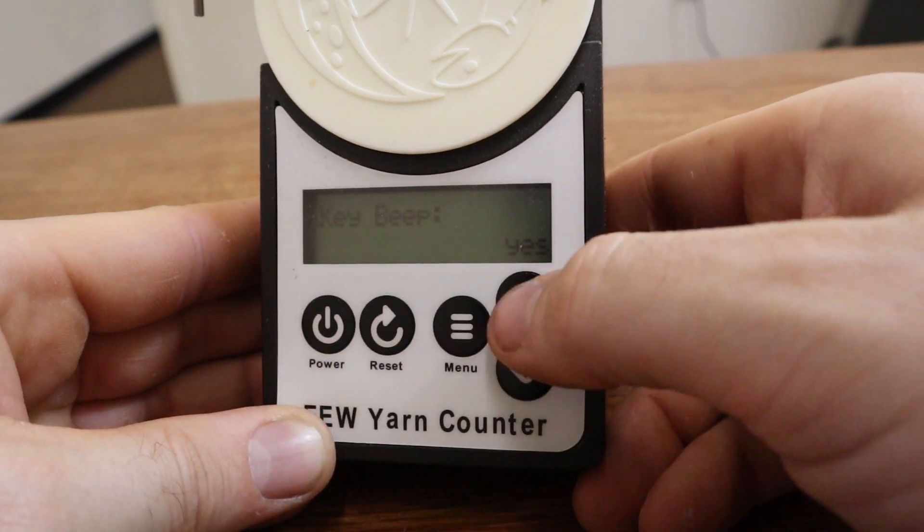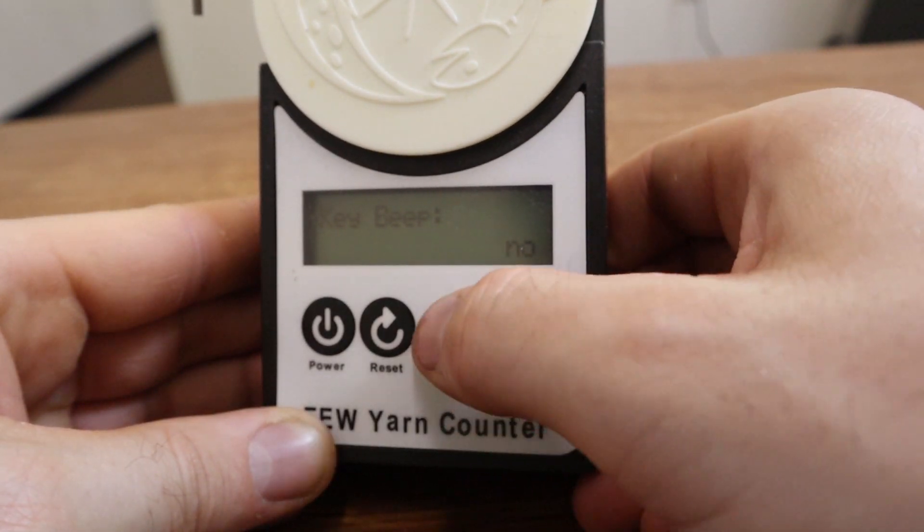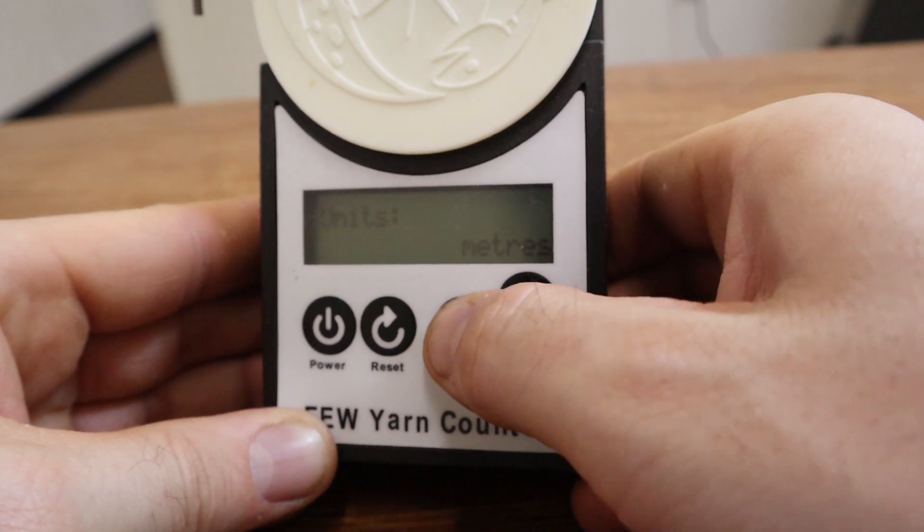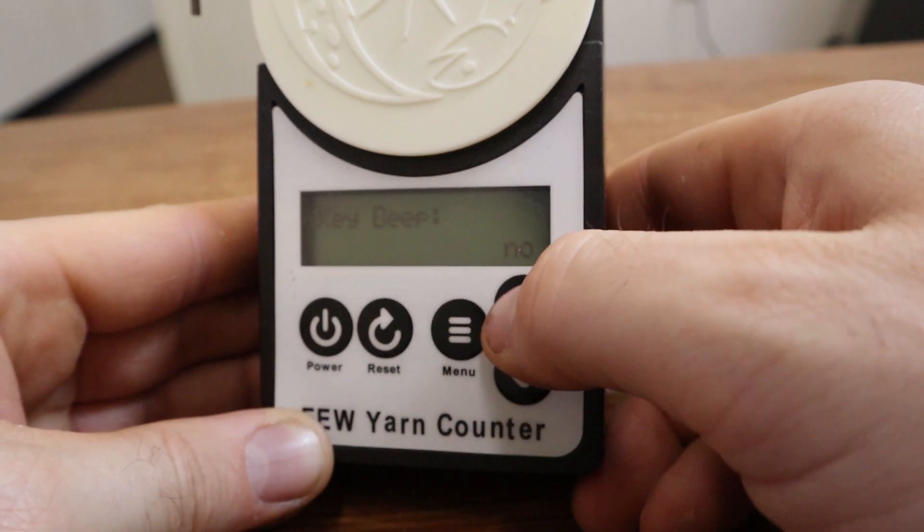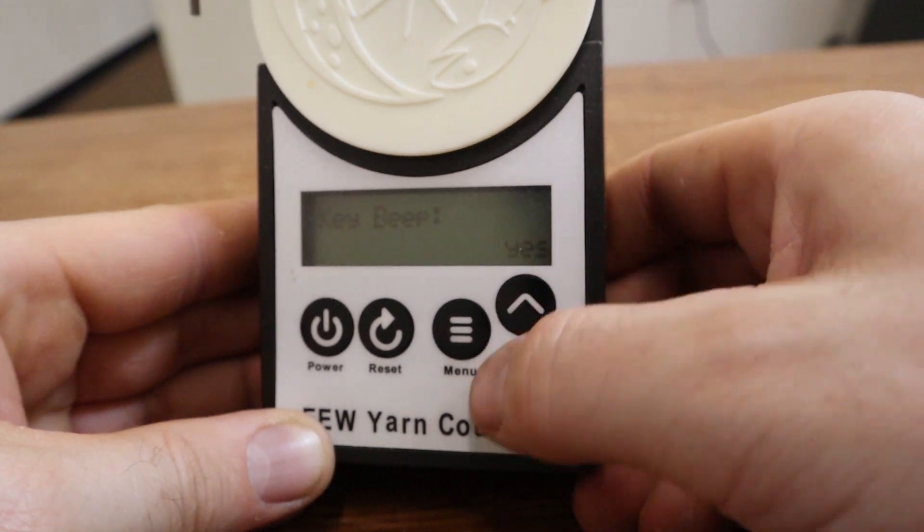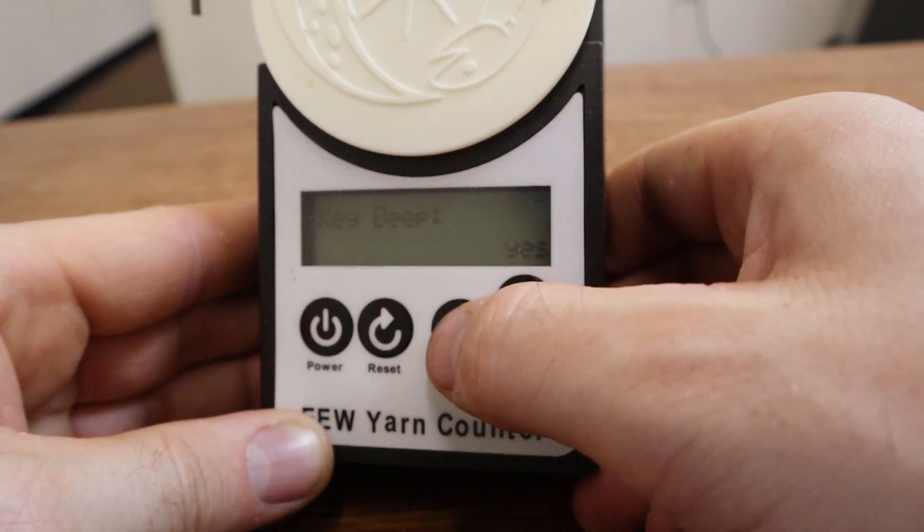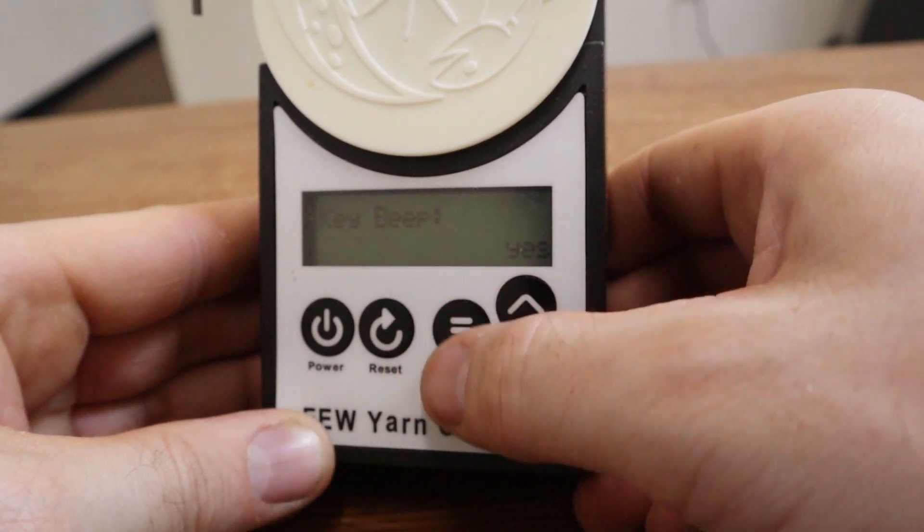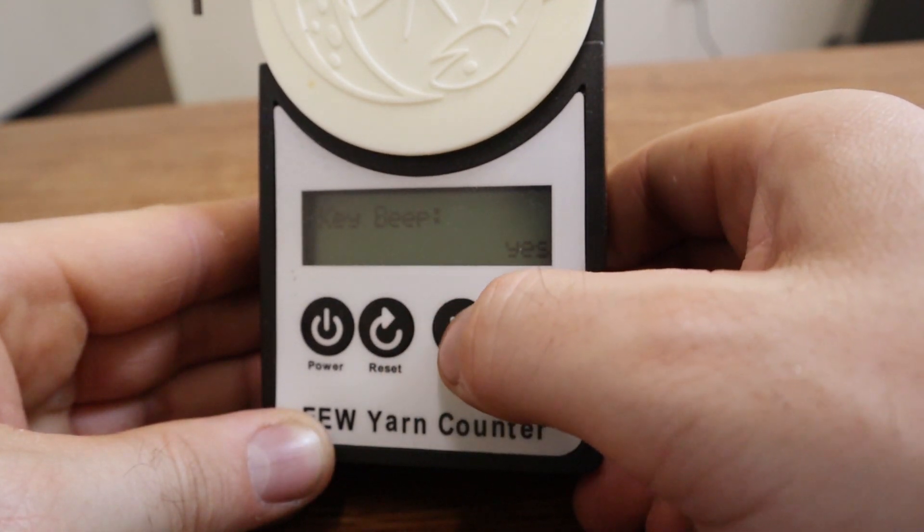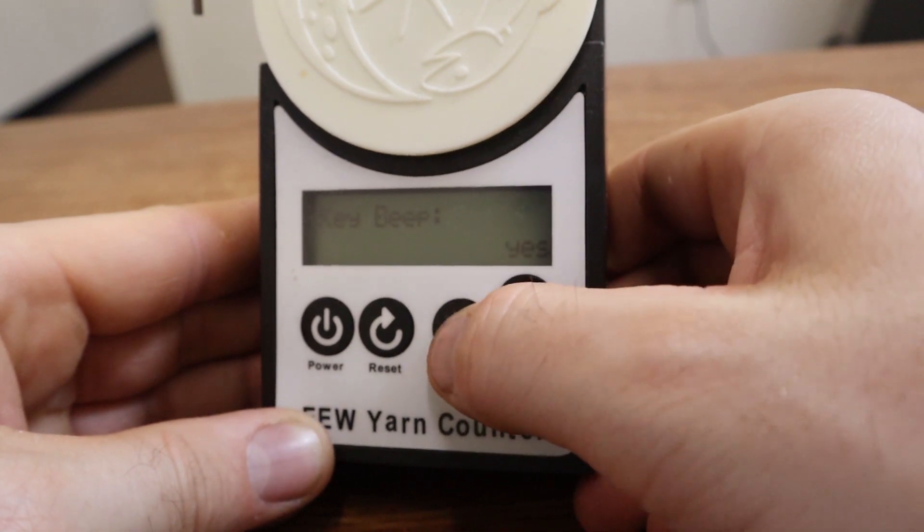This beep just controls whether it beeps when you're pressing keys. So now you can see I can go through the menus and there's no beeping. So if you don't want any noise from it, you can turn that off. But I kind of like it. It just kind of gives you a nice confirmation that a button was pressed and it wasn't double-pressed and things like that. So I'm going to turn it back on for the rest of this.